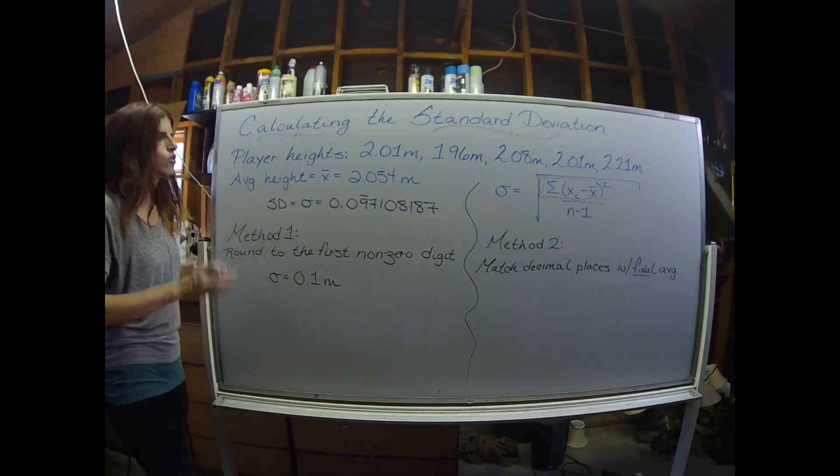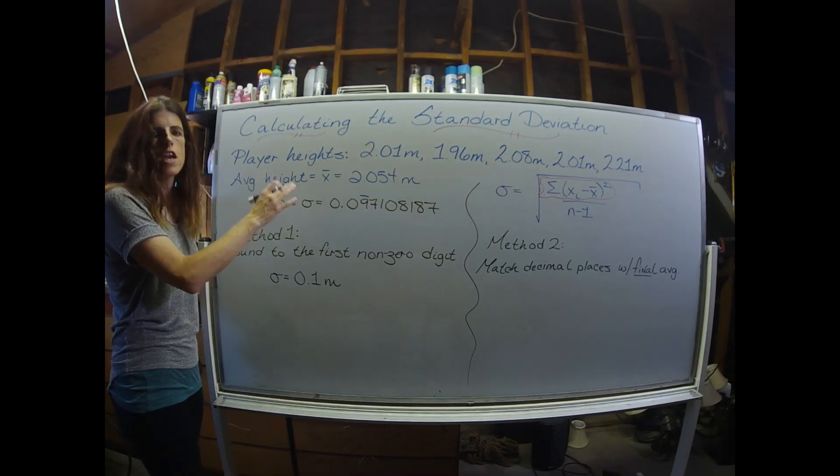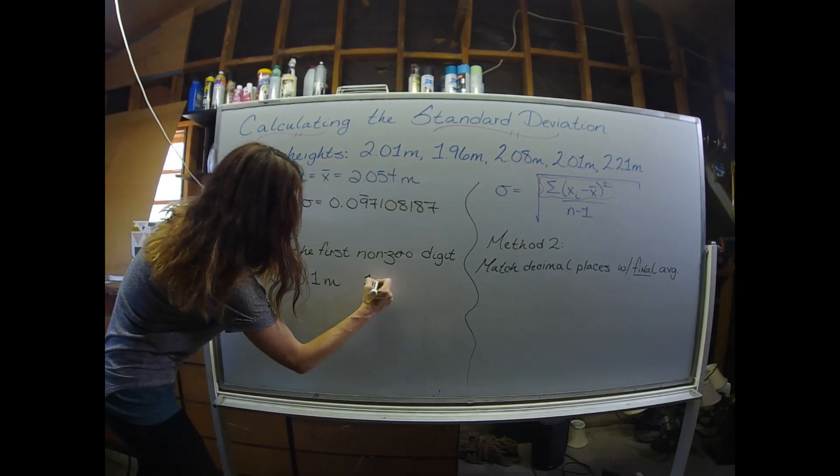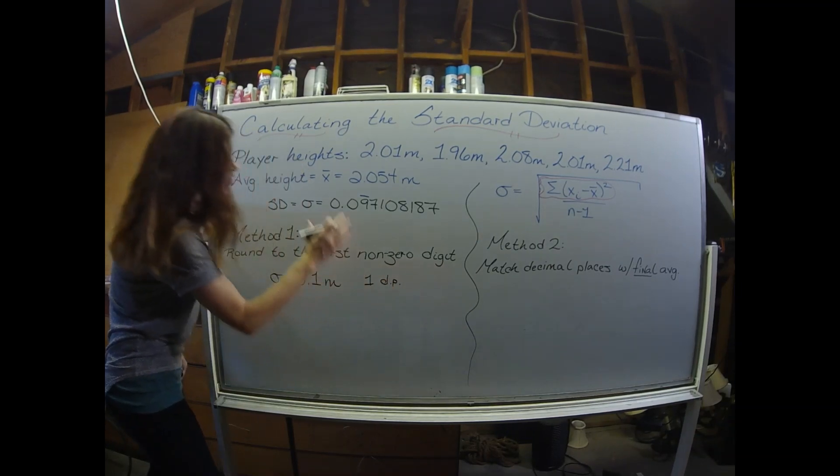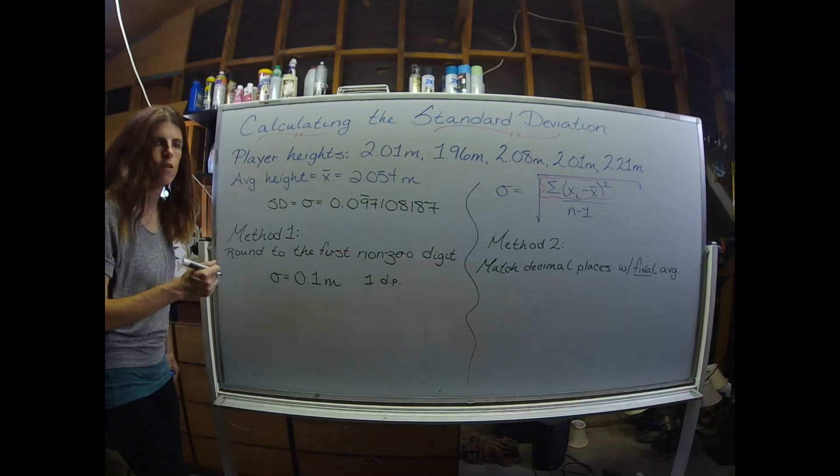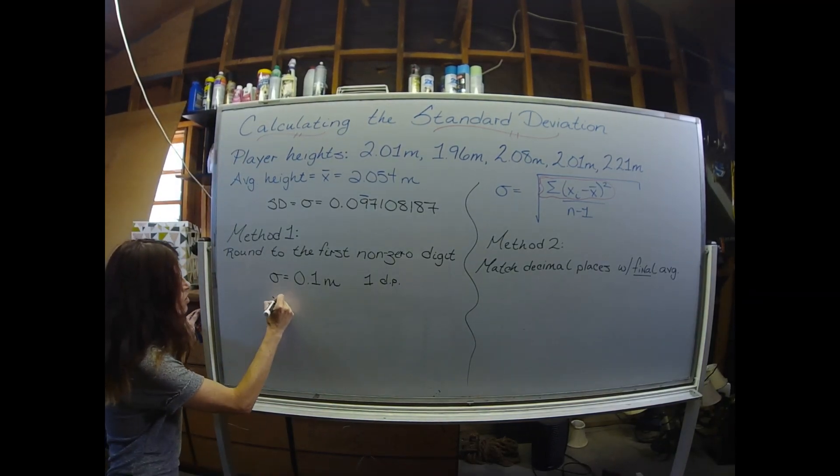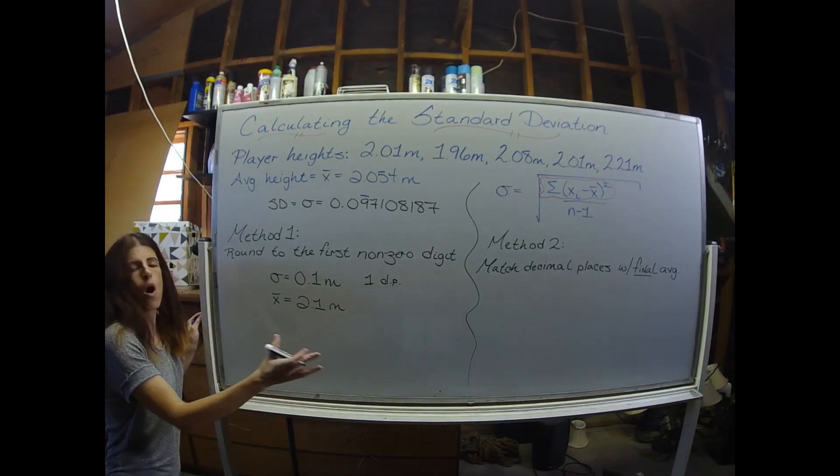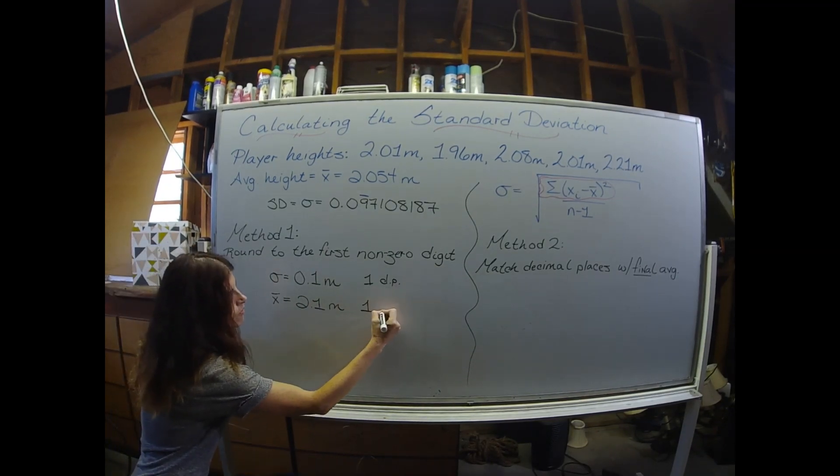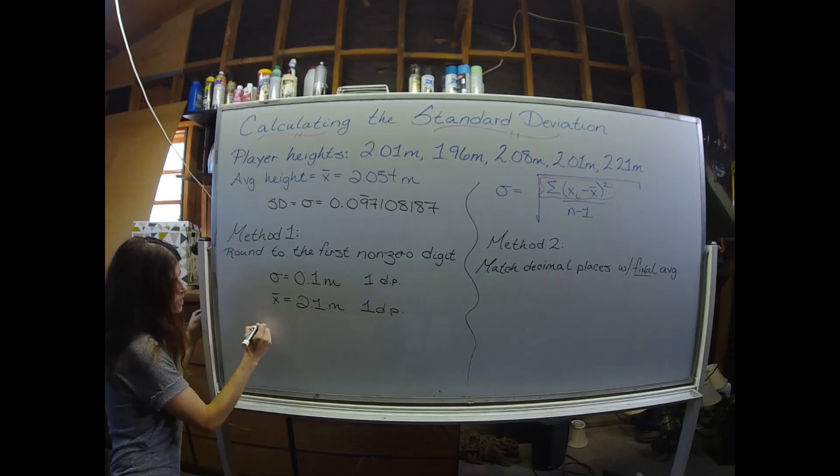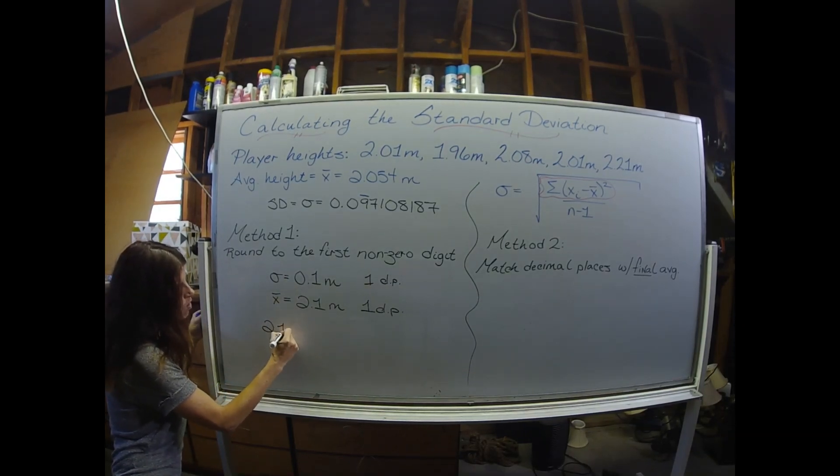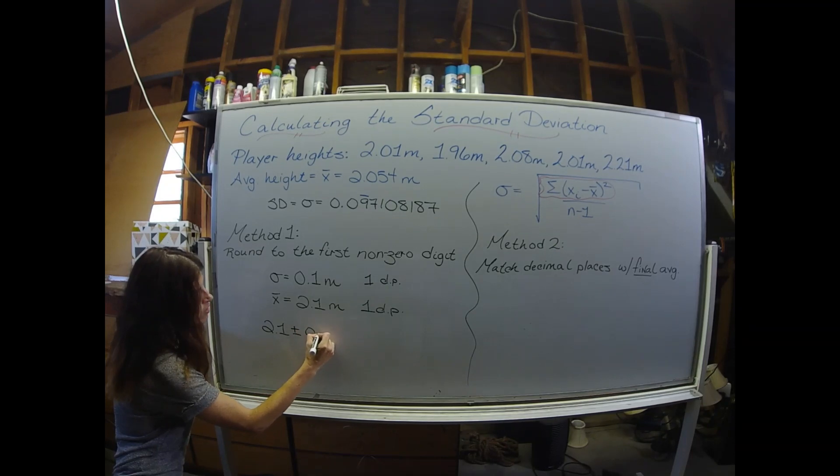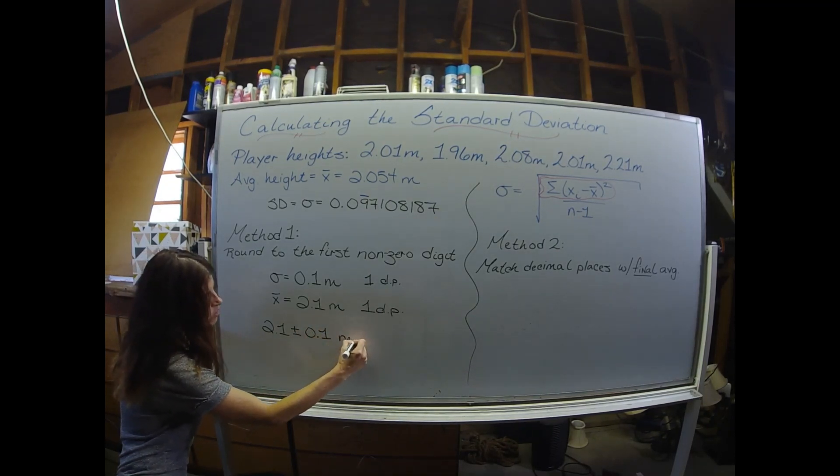With this approach, you typically go back to your average and round that to the same number of decimal places. So the standard deviation has one decimal place. I'm going to take this value, the 2.054, and round that to one decimal place. So my average then would be 2.1 meters. A more formal presentation of this average and standard deviation looks like this. We'll do 2.1 plus or minus your standard deviation. And don't forget units. This is meters.